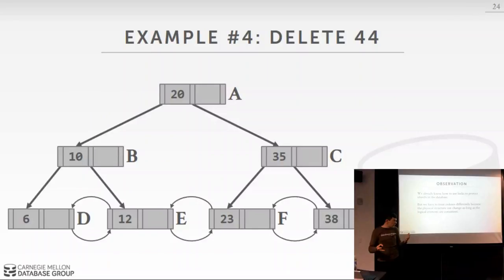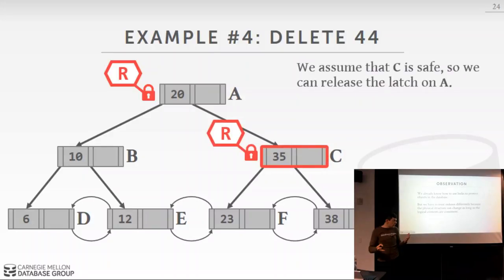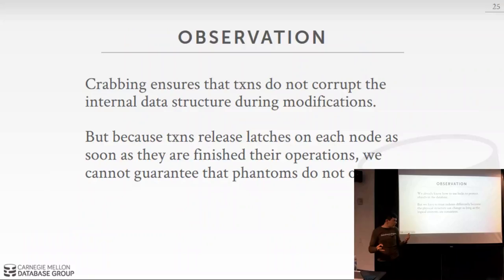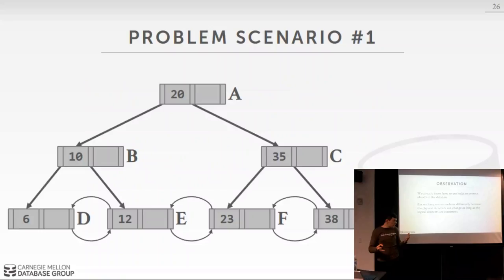With optimistic lock coupling, deleting key 44: take read latch on A, read latch on C, immediately release A, then acquire write latch on G, release C, and complete the delete — without blocking any concurrent readers. However, latch crabbing only protects the physical data structure. Because latches are released immediately after the operation, it does not protect the logical contents of the index from phantoms.